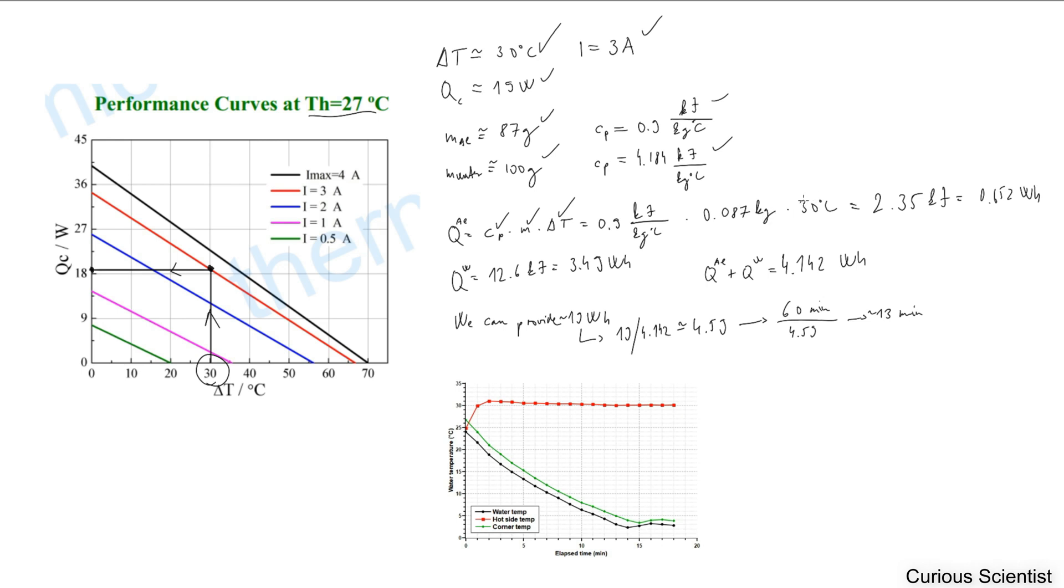Just to be sure, we can do the simplification for the units. Kilogram goes out and Celsius goes out as well, so we stay with kilojoules. We have 2.35 kilojoule as final result.